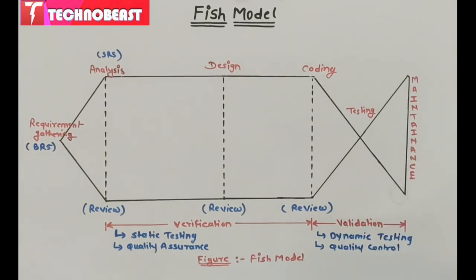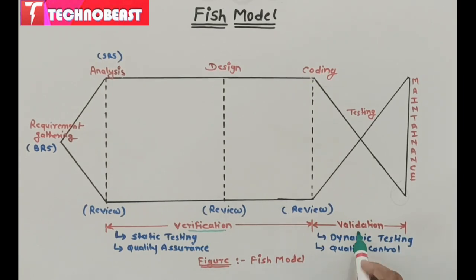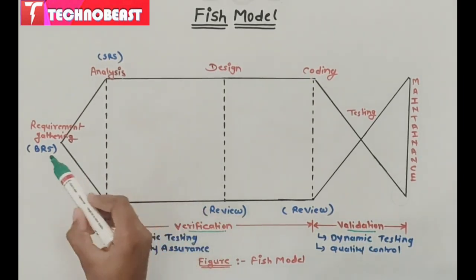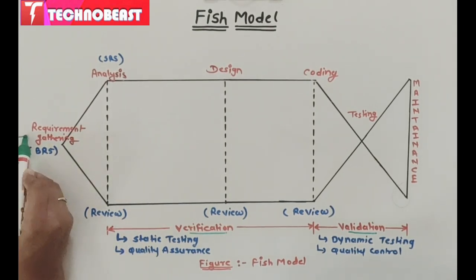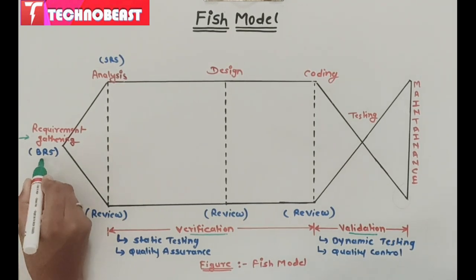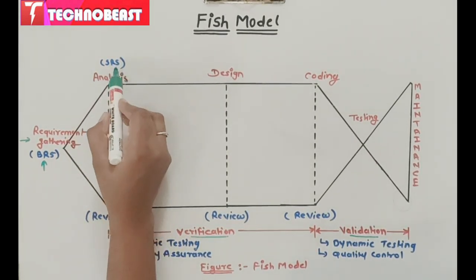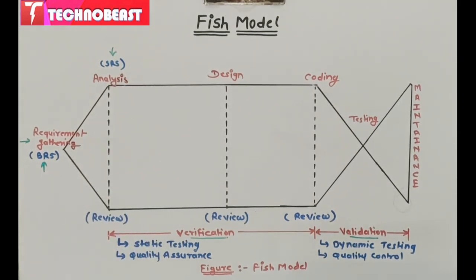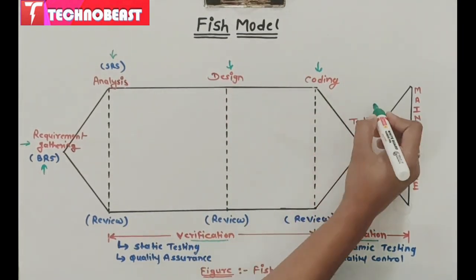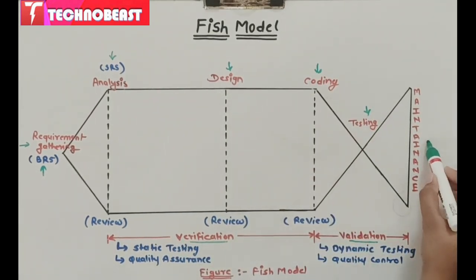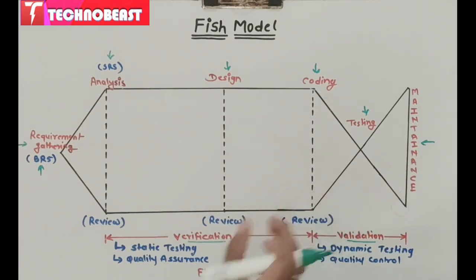The fish model consists of two main parts: verification and validation. Here we are going to see the phases working in the fish model. The first phase is requirement gathering, in which the BRS document will get documented. After that, the second phase is analysis, in which the SRS document will get prepared. After analysis there is a design phase, then a coding phase, then a testing phase, and lastly maintenance.